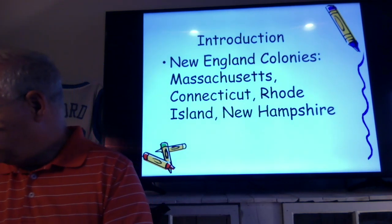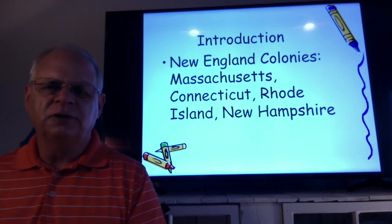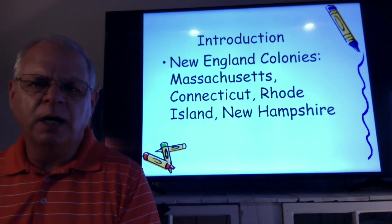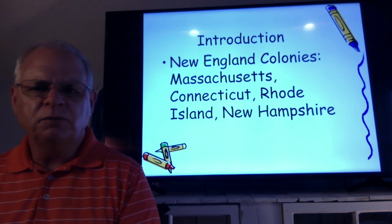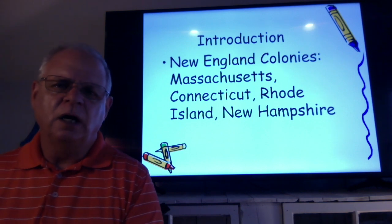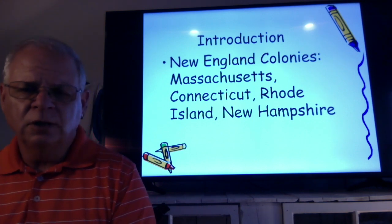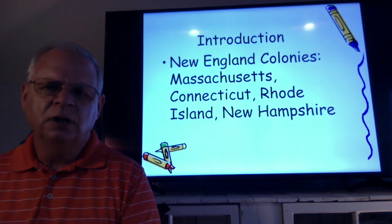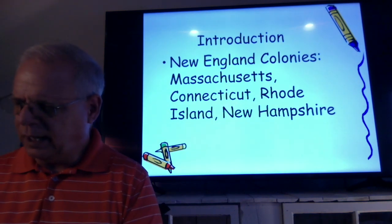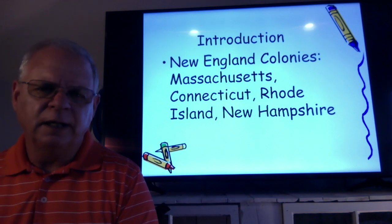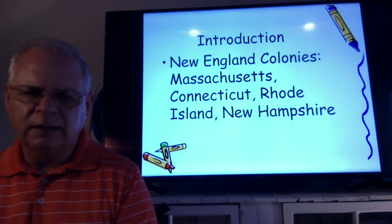Looking at page 20, things are switched around a bit in this chapter. First of all, you do need to know your colonies according to their region. The New England colonies are Massachusetts, Connecticut, Rhode Island, and New Hampshire — you need to be able to list them.